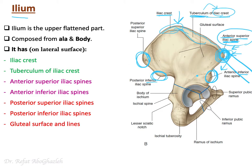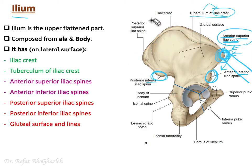When you look at the lateral surface of the ilium, you will find a wide surface known as the gluteal surface. This name comes from the gluteal muscles — gluteus maximus, medius, and minimus — which are mainly attached to this area.